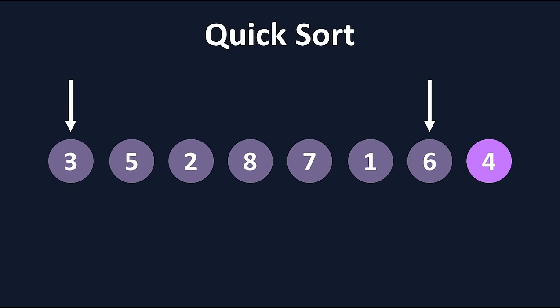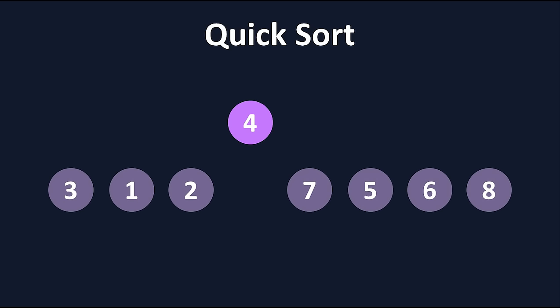We continue through the list until our pointers cross. Once they do, we replace the element at the left pointer with our pivot. Now, everything before our pivot is less than the pivot, and everything after our pivot is greater.